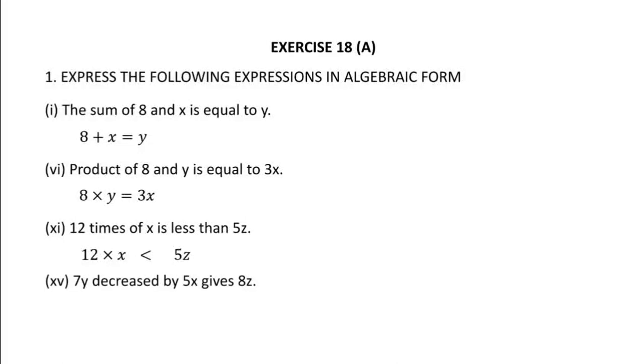Question number 15, 7y decreased by 5x gives 8z. So 7y when it is decreased by 5x will get 7y - 5x which is equal to 8z. So this is question number 1.